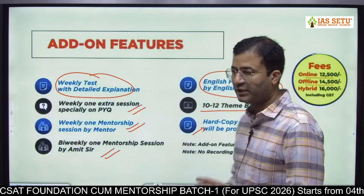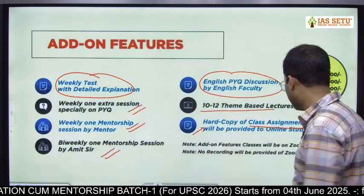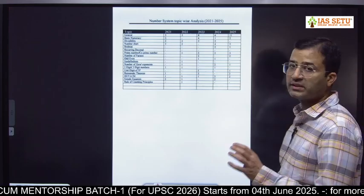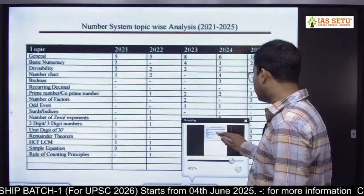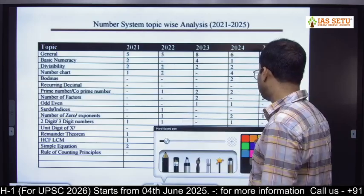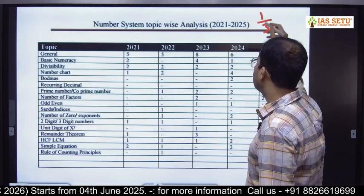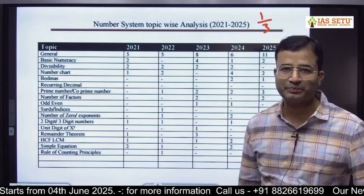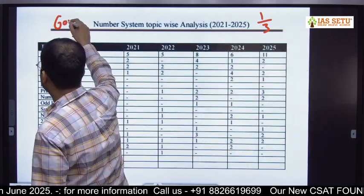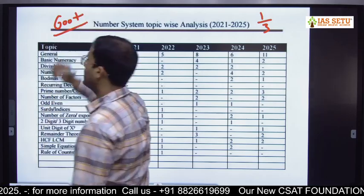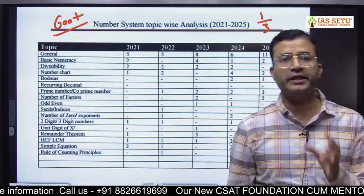There is one more add-on feature which is going to be very important. As we can see, number system is the darling topic of UPSA, and this year nearly 25-plus questions — meaning one third of the paper — is actually from number system. So I will provide you around 600-plus extra questions on number system on the latest pattern.